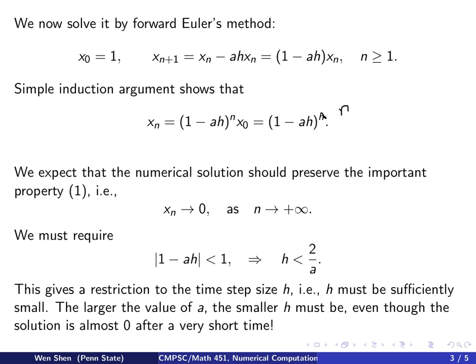The larger the value a, the smaller h must be. Even though your solution is almost 0 after a short time, you still must take tiny steps in your numerical method to preserve exponential decay. This is an annoying stability condition.